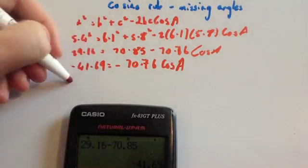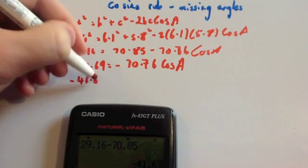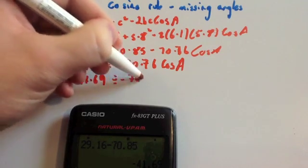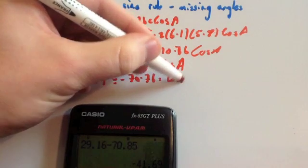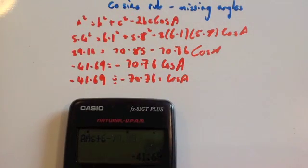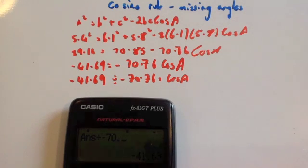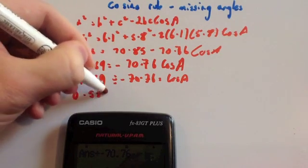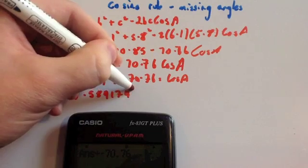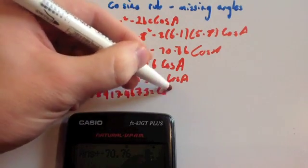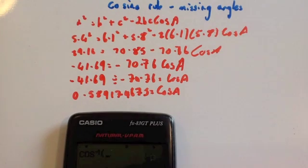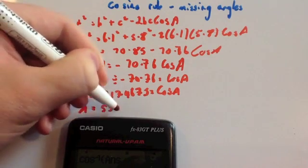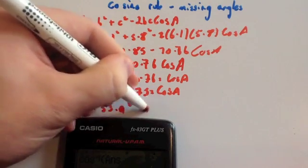Then divide, so -41.69 ÷ -70.76, that equals the cos of A. Divide that by -70.76 and I get cos A = 0.589174675. Then do the inverse cos, so shift cos answer equals A, or x equals 53.9 degrees to 1 decimal place.